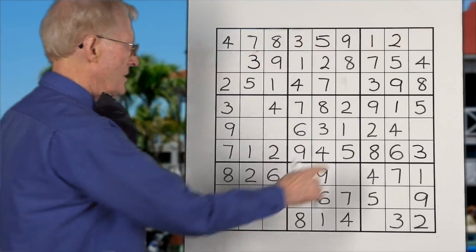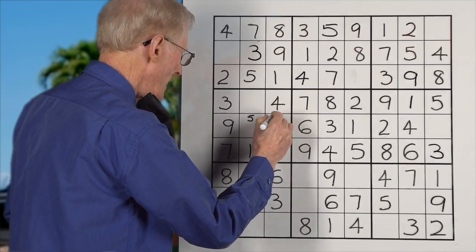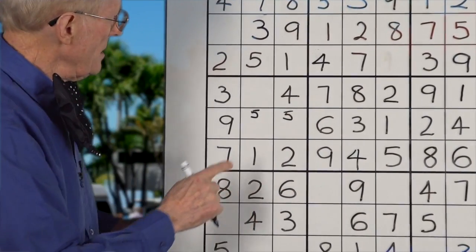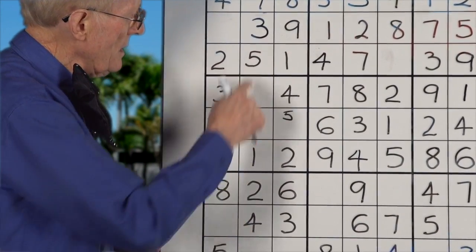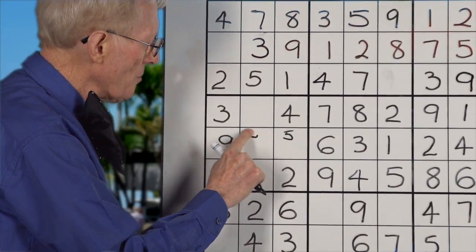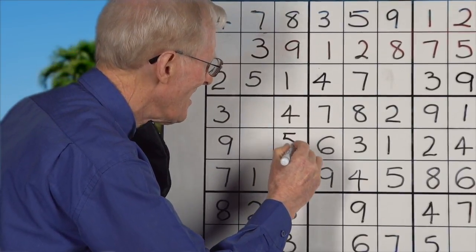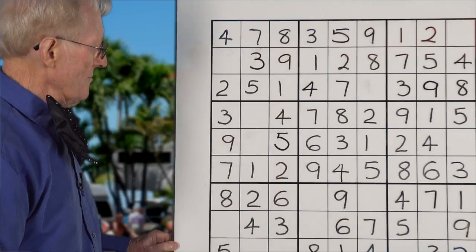Fives, we have a top, a bottom. We have a five here and a five could go there. But look, there's a five right up in here. So you can't have a five there. So therefore, you can rub that one out. This one becomes your five. Very good.